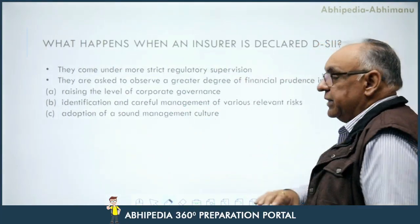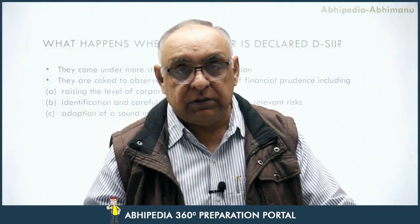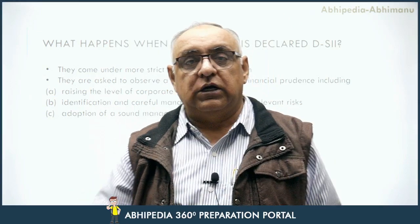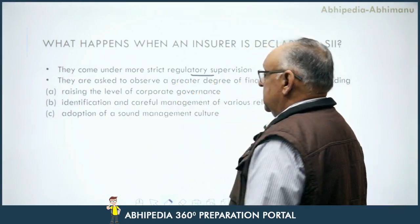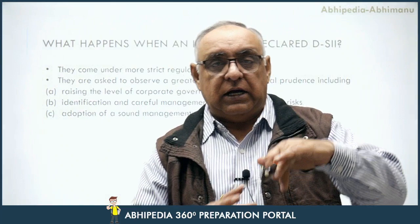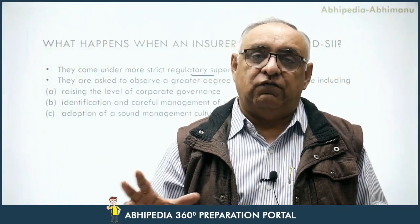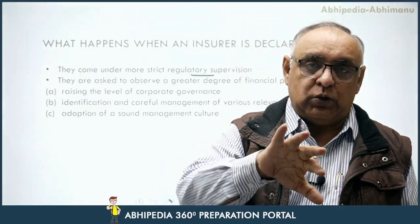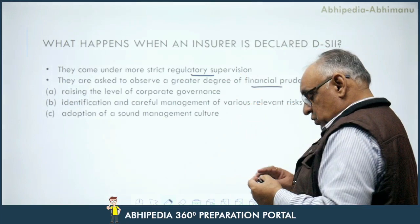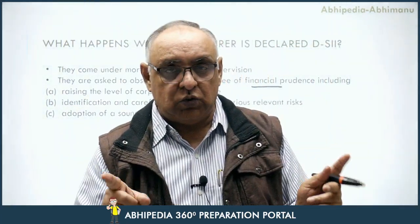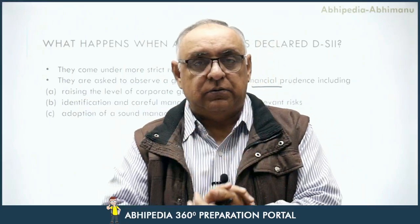So what happens when an insurer is declared as a D-SII? When an insurance company is declared as a Domestic Systematically Important Insurer, it comes under more strict regulatory supervision. As too-big-to-fail companies, they are asked to observe a greater degree of financial prudence — they need to observe a greater degree of financial prudence.